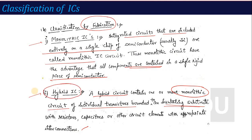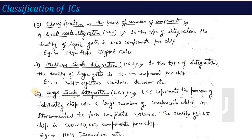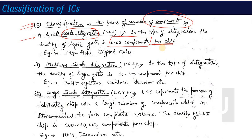The third important classification is by the number of components, which defines IC technology. ICs are classified as Small Scale Integration (SSI), Medium Scale Integration (MSI), Large Scale Integration (LSI), Very Large Scale Integration (VLSI), and Ultra Large Scale Integration (ULSI). If there are 1 to 10 components per chip — less than 10 components — the IC is called Small Scale Integration (SSI). An example is digital gates, which have very few components.